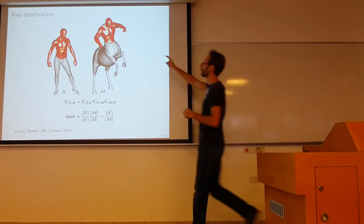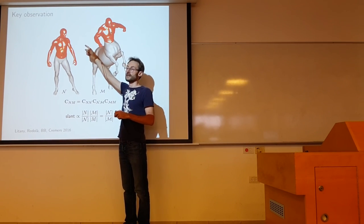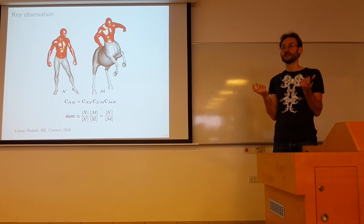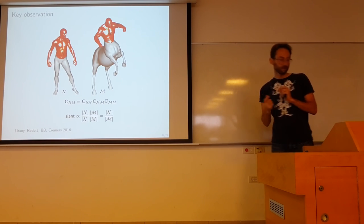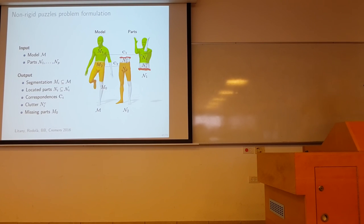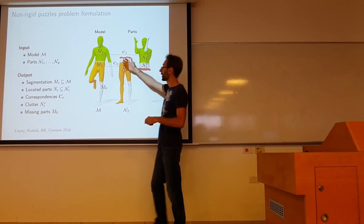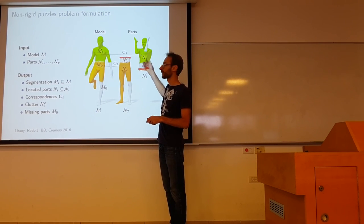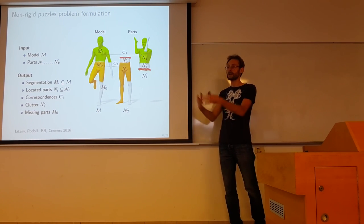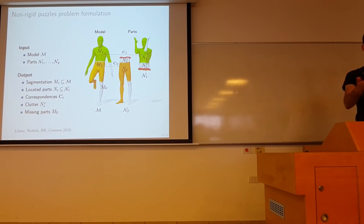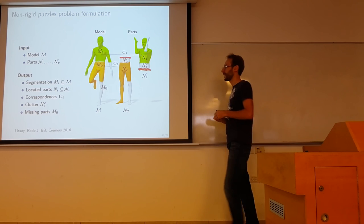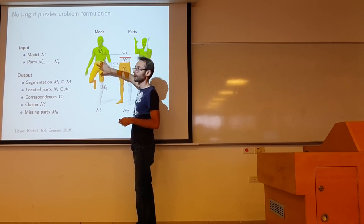The problem of multi-shape correspondence looks like this: there is still a model shape, and now multiple parts. They might have overlaps — so basically there will be some clutter. There might be missing parts that have no correspondence in the full shape, and there might be other objects with nothing to do with correspondence. Think of assembling puzzle pieces that were scanned, with some background clutter, maybe pieces from other puzzles. We are looking for the parts in the model shape corresponding to each piece — these are not known a priori.